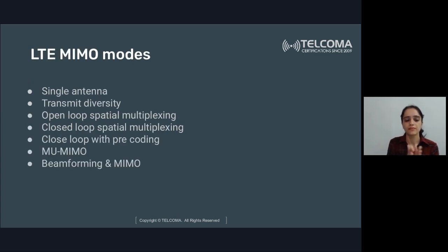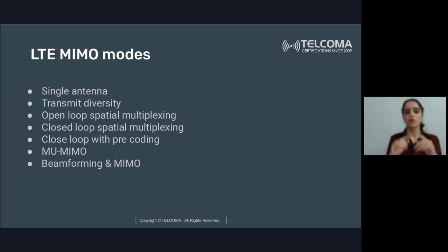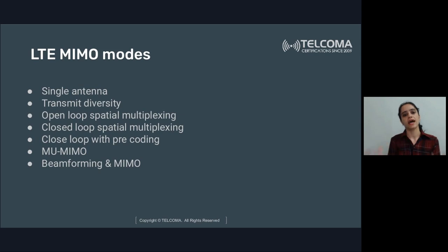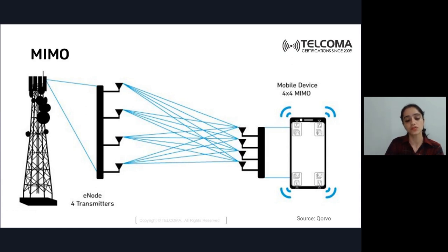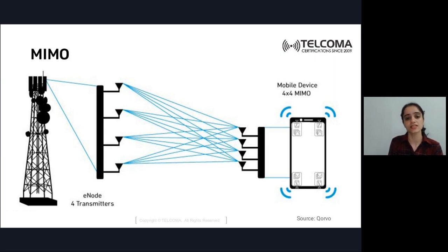MIMO has different modes: single antenna, transmitter diversity, two transmitters, open loop spatial multiplexing, closed loop spatial multiplexing, closed loop with pre-coding, multi-user MIMO to accommodate multiple users, and beamforming. In LTE, the eNodeB can use four transmitters with four-by-four MIMO, creating multiple layers for high-speed data transmissions.